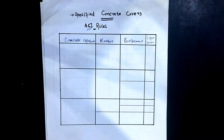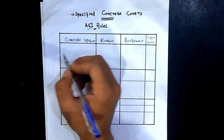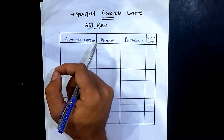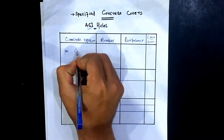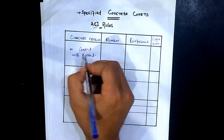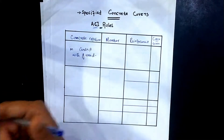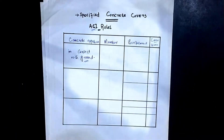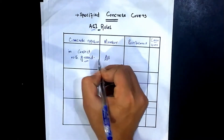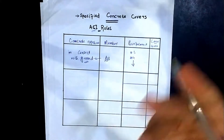The first case is if a concrete member is in contact with soil permanently — such as a foundation, slab, beam, or column cast against and in permanent contact with ground. Any member in contact with ground — whether it is a slab, beam, column, or foundation — and for any reinforcement type regardless of bar number is covered under this case.